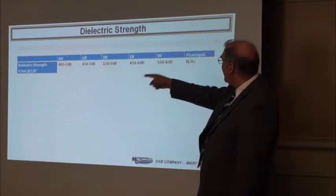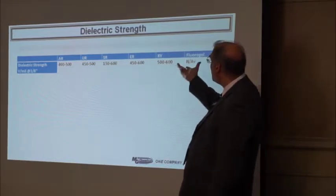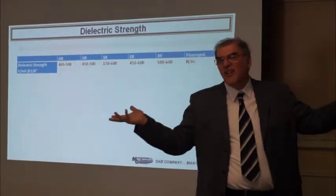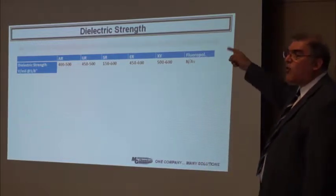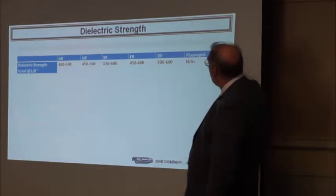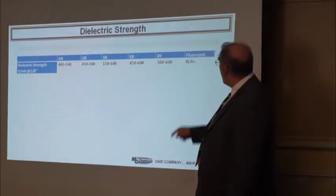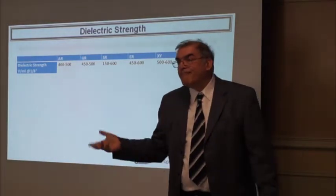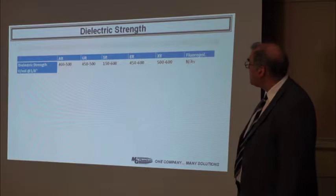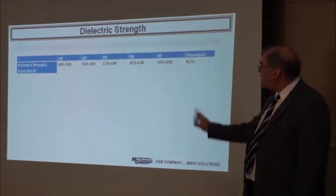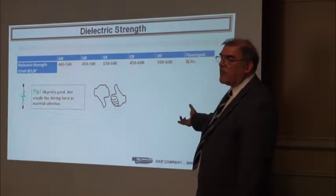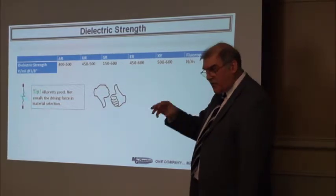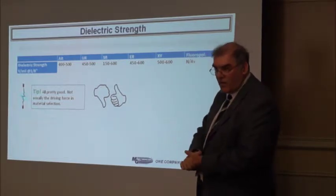If you look at the electric strength at one-eighth of an inch and compare various materials, there's a range, but you'll find they're all performing more or less in the same area. It's not usually a great selection criterion — unless you're looking for something very specific. You wouldn't select by chemical family based on this. Electric strength is generally not the driving force in material selection, but you should ask for the exact value if you have an arcing concern, so you can calculate the exact thickness you need.